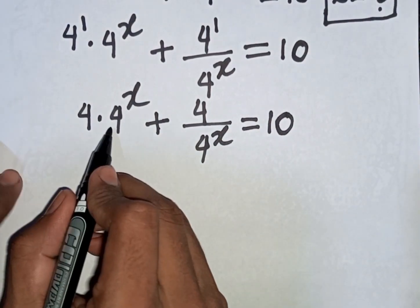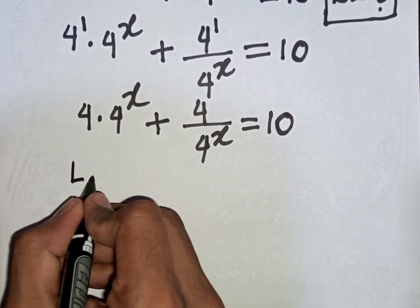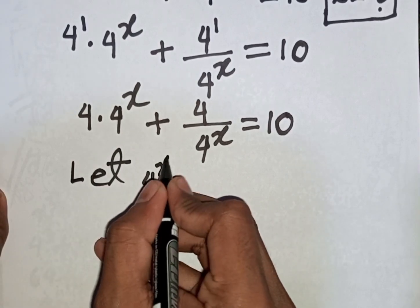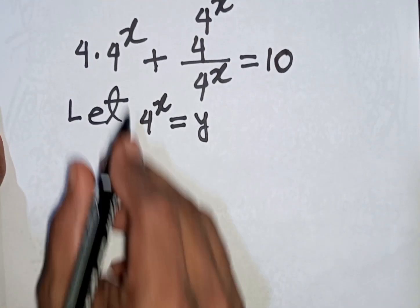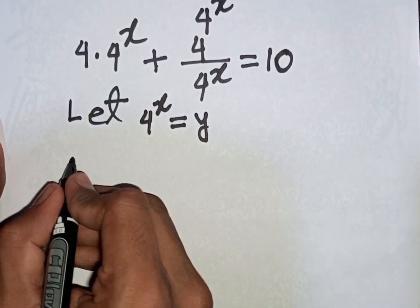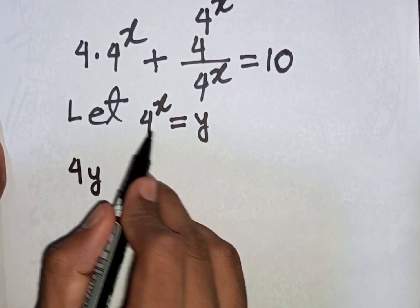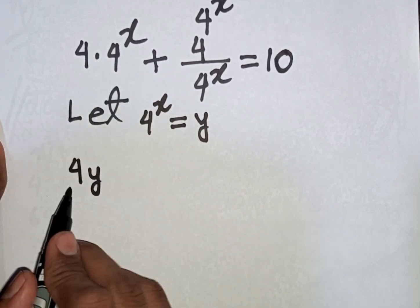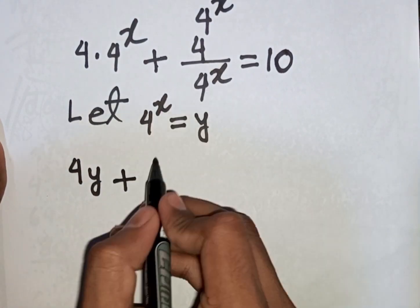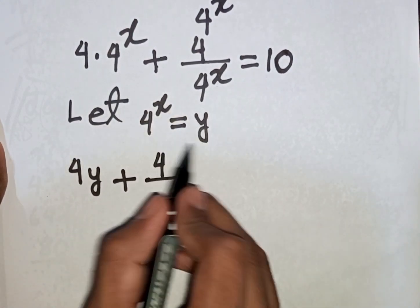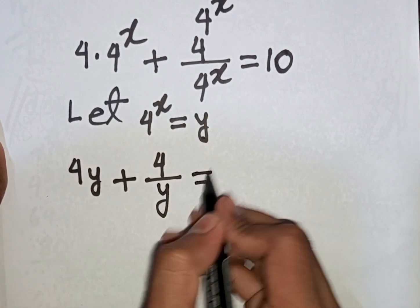We see that 4 power x appears in both terms and they are the same. So let 4 power x be substituted by y. Our equation becomes 4 times y, that is 4y, plus 4 over 4 power x, that means y. This equals 10.